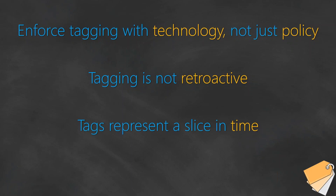Tags represent a slice in time. Because tags can be changed, what is named 'production-web-001' today might be changed to 'application-web-001' tomorrow. When you use tags for reporting, you should know that this data represents a point in time and can change over a period of time — unless your tagging policy, tagging strategy, or the technology you use to enforce compliance is strong enough and you have control mechanisms to prevent unauthorized resource name changes.